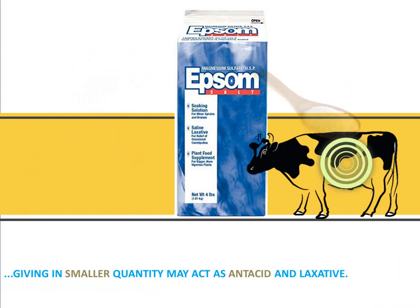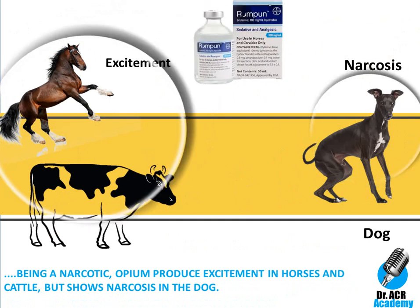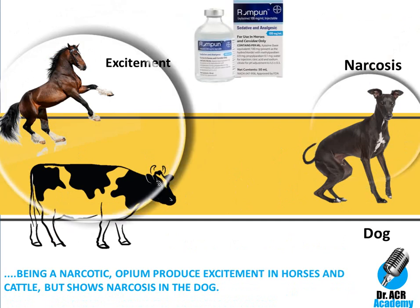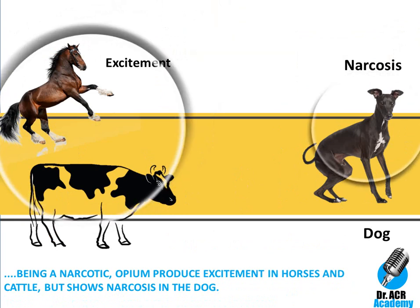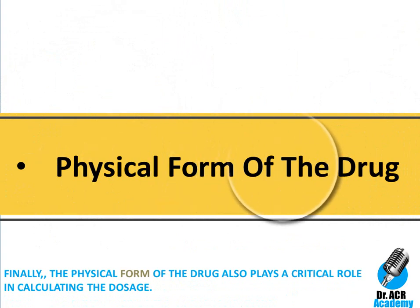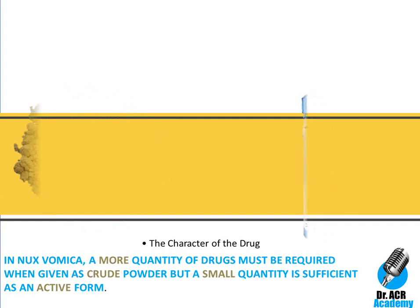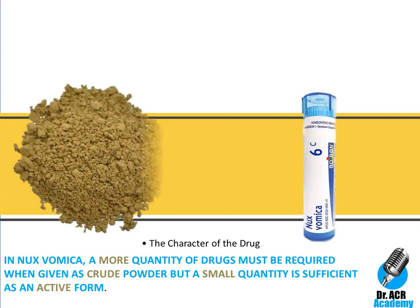Another factor is the type of species. Due to changes in anatomical and physiological variations, the dose of a drug changes from species to species. For instance, opium produces excitement in horses and cattle but shows narcosis in dogs. Finally, the physical form of the drug also plays a critical role in calculating dosage. In Nux vomica, a greater quantity is required when given as crude powder, but a small quantity is sufficient in its active form.